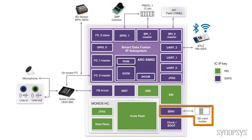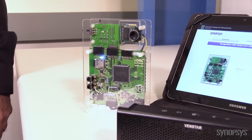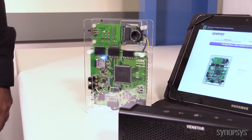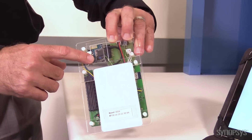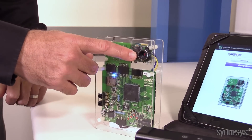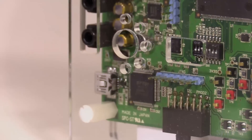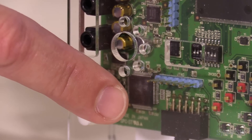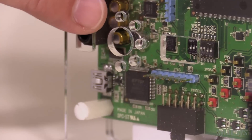The SD card provides storage for our music library used in the demo. The IoT demo board consists of the integrated MCU, a Bluetooth module for tablet connection and audio streaming, a 3 megapixel camera for face detection, a 9D sensor chip, and built-in audio microphone input.